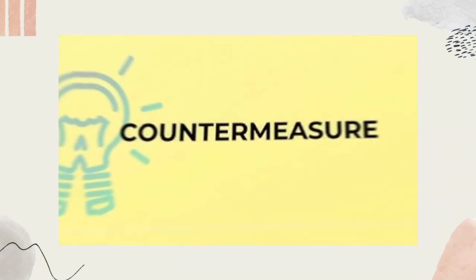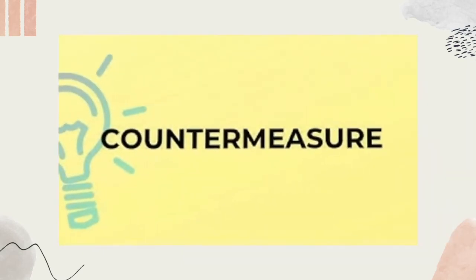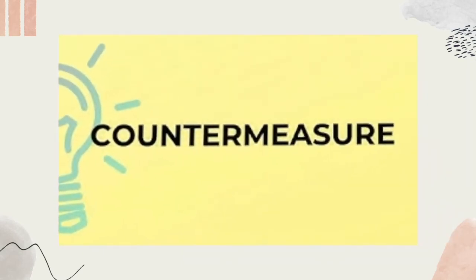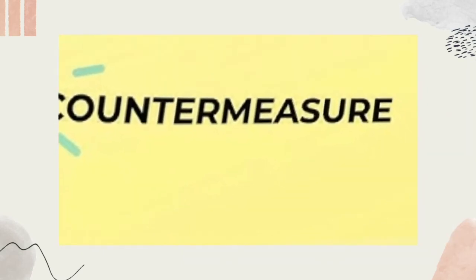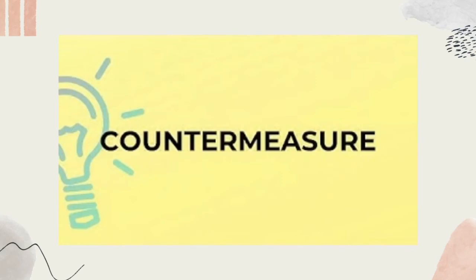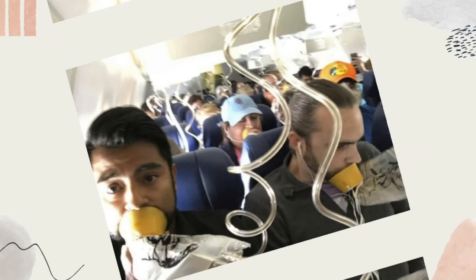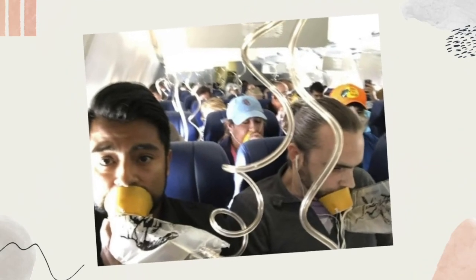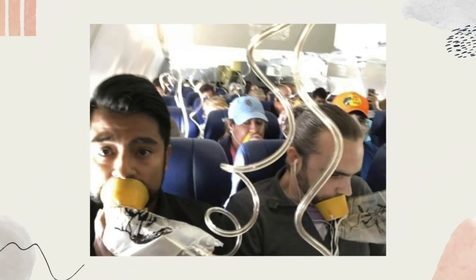So, how to counter-measure it? The pilot should exit the ash cloud as quickly as possible and turn on engine and wing anti-icing packs. If volcanic dust fills the flight deck, the crew may need to use oxygen masks.